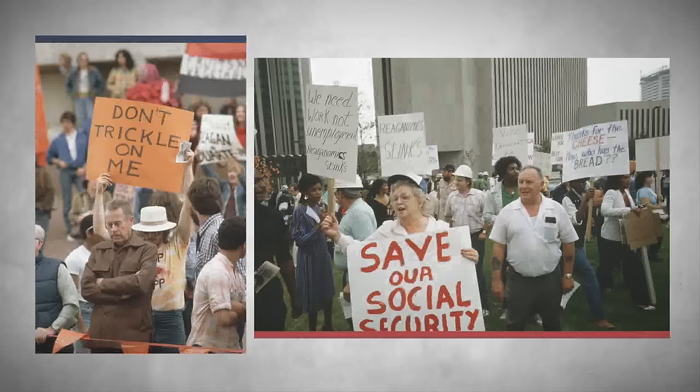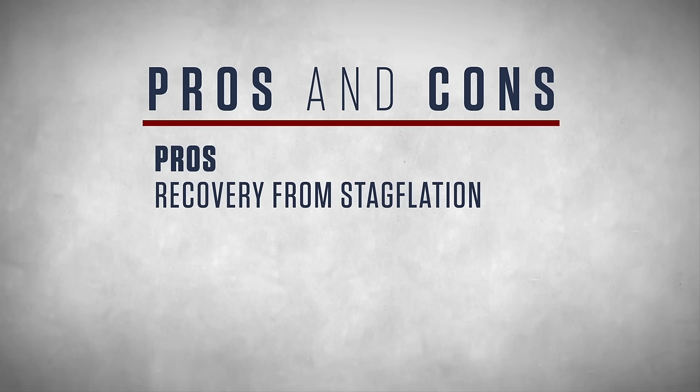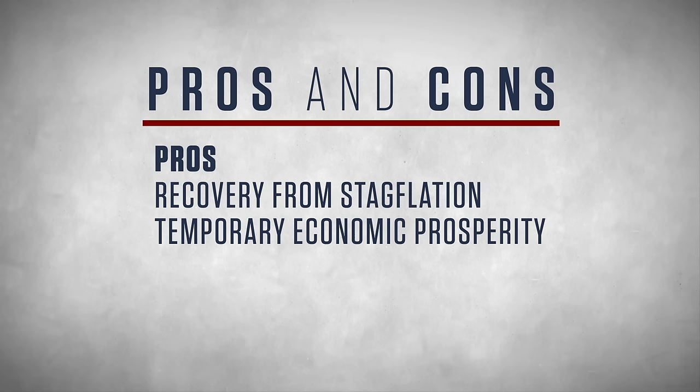Reagan's policies were highly debated, and economists still argue about the pros and cons of Reaganomics in terms of both immediate and lasting effects. Proponents argue that by 1983, the nation's economy had started to recover from stagflation. This led to a period of economic prosperity that continued through the rest of Reagan's presidency, though another recession soon followed after he left office.